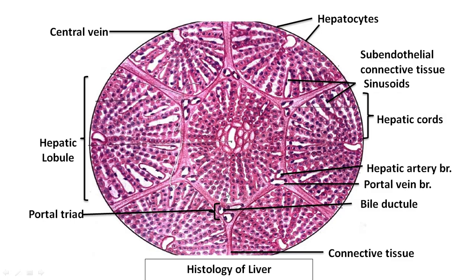The hepatocytes radiate from the central vein to the periphery in cords of cells which branch and anastomose with one another around the sinusoids. Each hepatocyte has multiple surfaces — minimum six like a cube, maximum up to 25 like a cut diamond. The surfaces facing one another have a tiny depression forming the bile canaliculi. The flow of bile is from the central vein towards the portal triad, where the bile ductule collects the bile. The cells lining the bile ductule are called cholangiocytes.